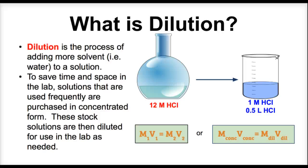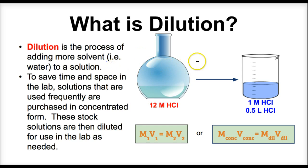Hey guys, this is Mr. Millings and today we're going to learn about dilution and then we're going to use the dilution formula to solve several different types of problems relating to dilution. Dilution is the process of adding more solvent to a solution. Anytime we're adding more solvent or water to a solution, we are causing that solution to be less concentrated and more diluted.